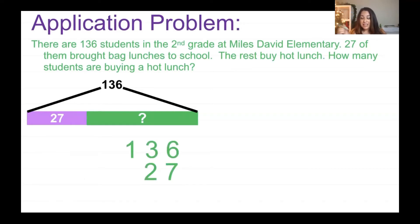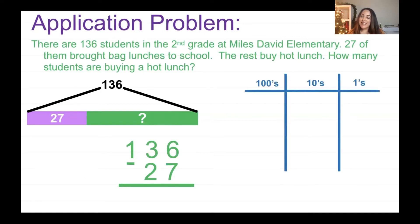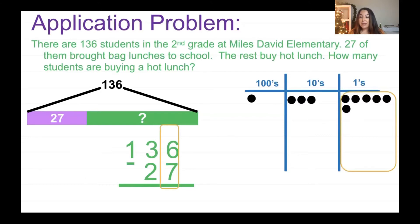Let's make our hundreds, tens, and ones chart and represent my number. I have 136 and I'm going to take away 27. Let's look at the number in the ones place: there's a 6 on top and a 7 below.